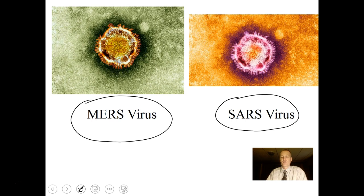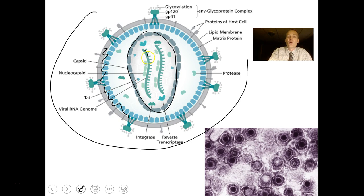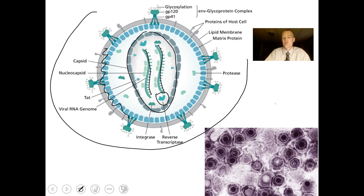The HIV virus is very dangerous. It has a viral envelope — a membrane on the outside surface — and a capsid inside containing two viral RNA molecules. It also carries an enzyme called reverse transcriptase. This is what HIV looks like viewed through an electron microscope.